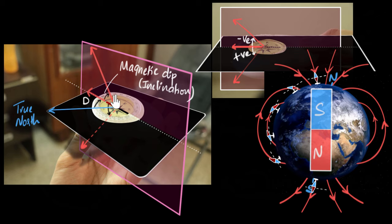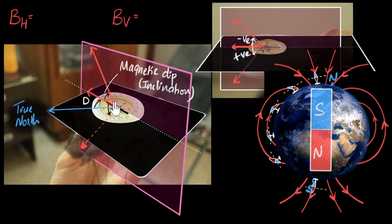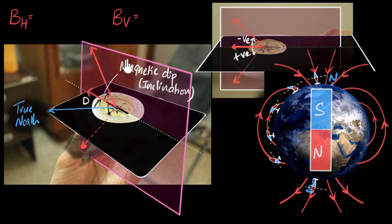Another super important use of magnetic dip values is that it helps us calculate the horizontal and vertical components of the magnetic field. For example, if you're doing an experiment on a tabletop using the Earth's field, you don't care about the total field — you only care about the horizontal component, because that's the only part that affects your experiment. Similarly, in other experiments you might need the vertical component. So knowing the dip value, if you know the total magnetic field value, you can figure these out. Can you pause and think about how to do that?